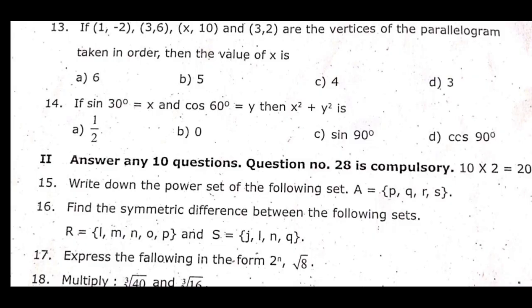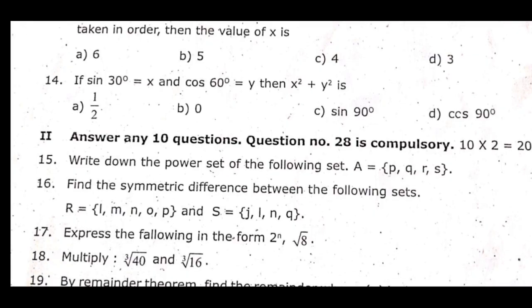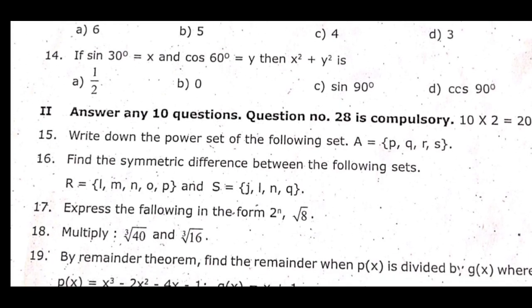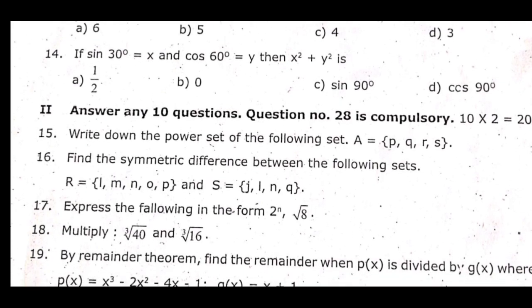Fourteenth one: If sin 30 degrees equal to x and cos 60 degrees equal to y, then x squared plus y squared is dash.